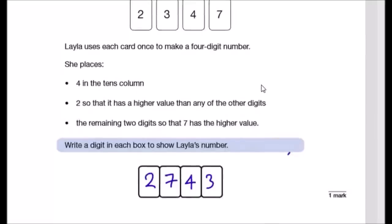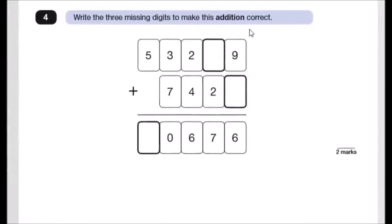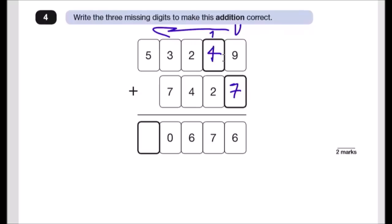Question 4: write the three missing digits to make this addition correct. Always start from the units on the right. Nine plus something gives a 6, so 9 + 7 = 16, carry the 1. Then 1 + something + 2 = 7, so the missing digit is 4. Next: 2 + 4 = 6, checks out. Then 3 + 7 = 10, write 0 carry 1, and 1 + 5 = 6.